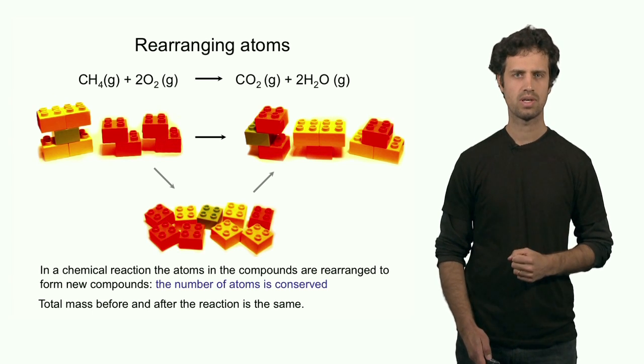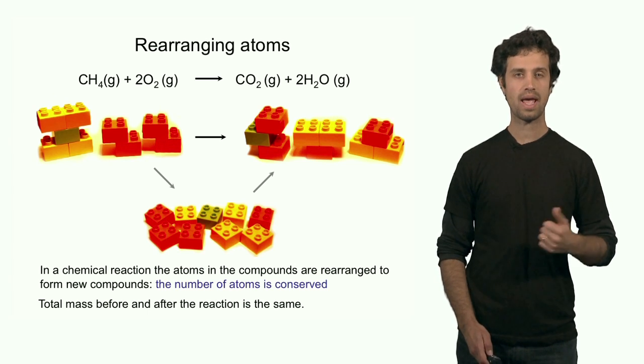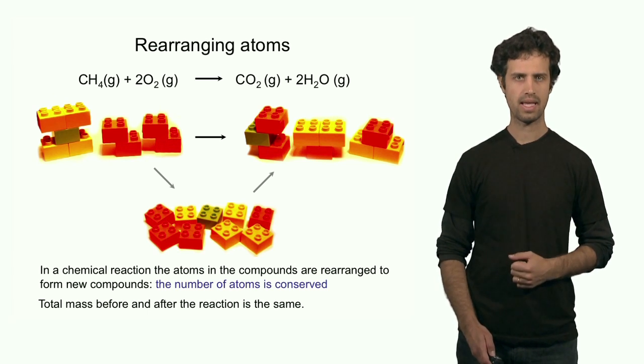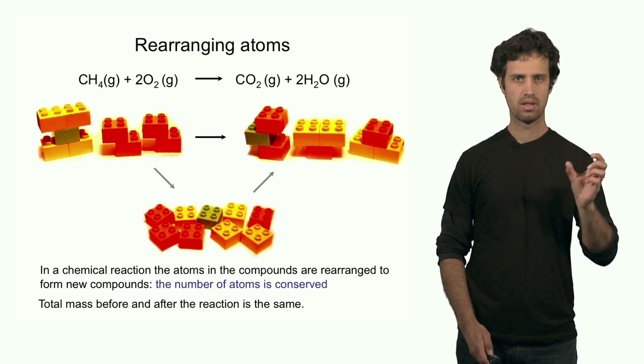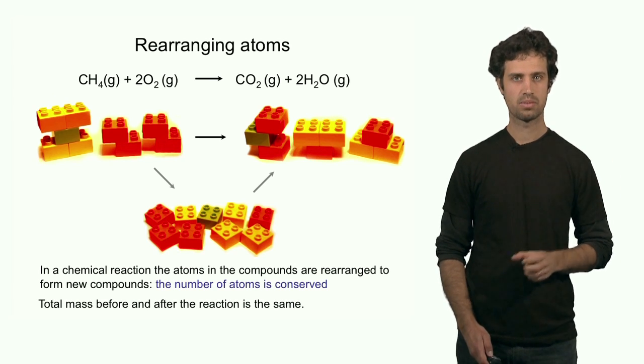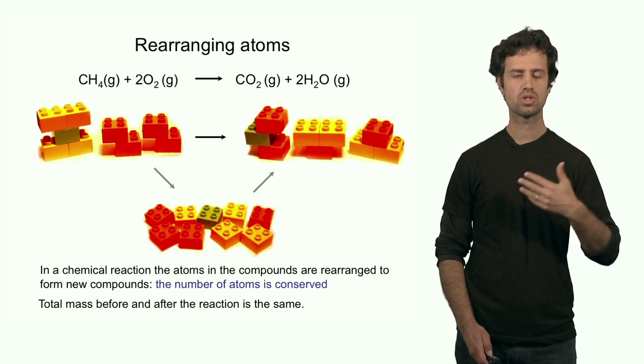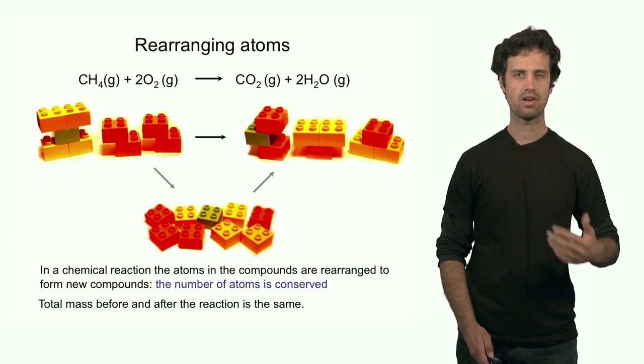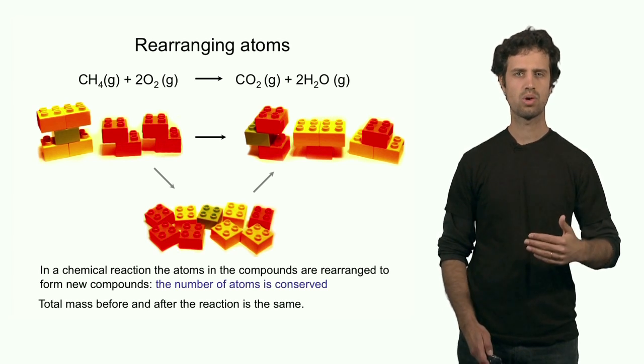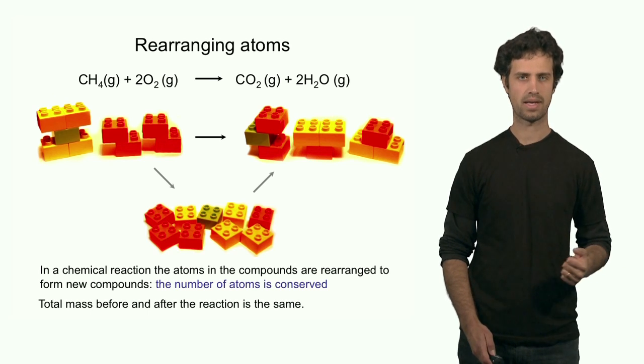And the same is true in a chemical reaction. The number of atoms is conserved. I don't add or take out any atom. That also means that I have the same number of atoms on the left as on the right, which means the total mass on the left and the right must be the same. There is so-called mass conservation, conservation of mass.